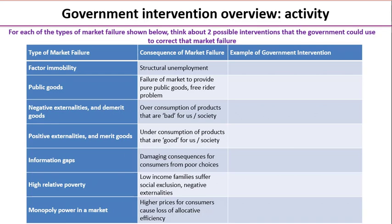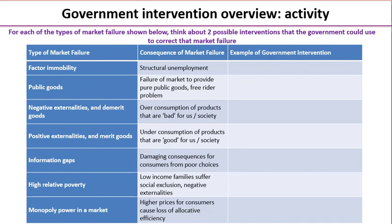Here are the possible answers we've come up with. Starting at the top with factor immobility — remember that can include geographical or occupational immobility — possible interventions could be, for example, better investment in education and training or better transport infrastructure.